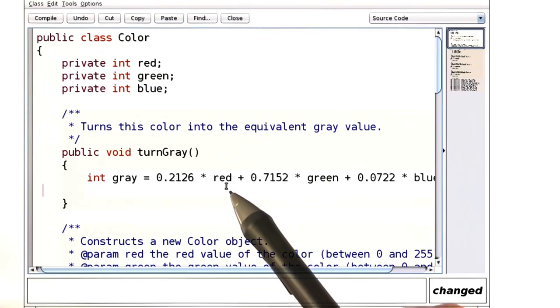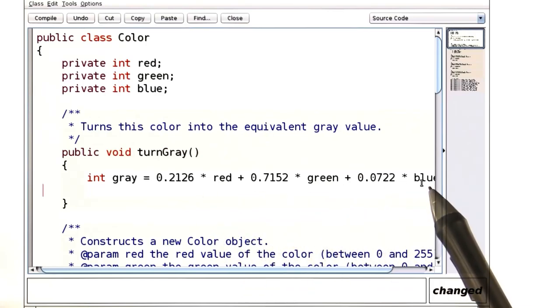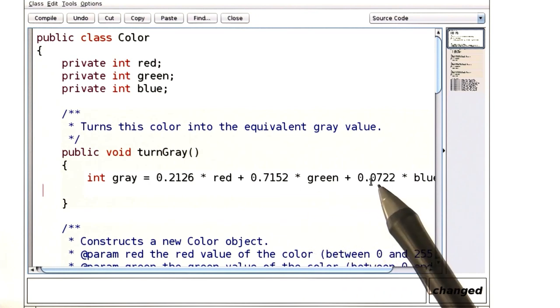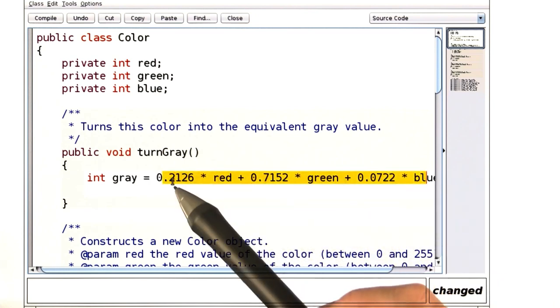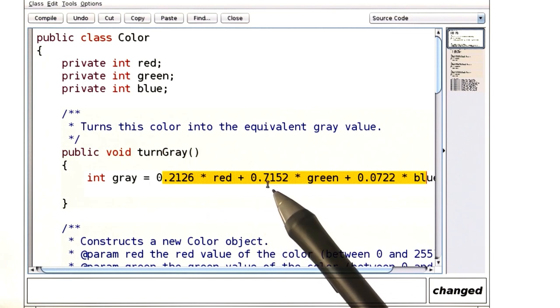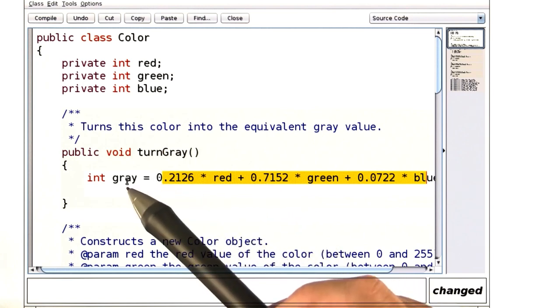Here, I'm computing the weighted average of the red, green, and blue values using these funny numbers. By the way, that can't work. The result here is a double because it involves fractional numbers, and I can't put a double into an int.